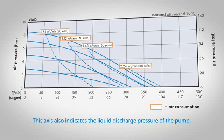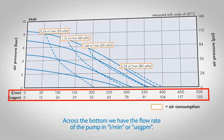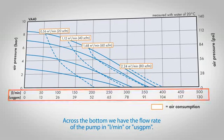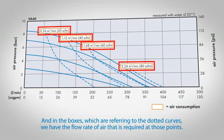This axis also indicates the liquid discharge pressure of the pump. Across the bottom we have the flow rate of the pump in liters per minute or US gallons per minute, and in the boxes which are referring to the dotted curves we have the flow rate of air that is required at those points.